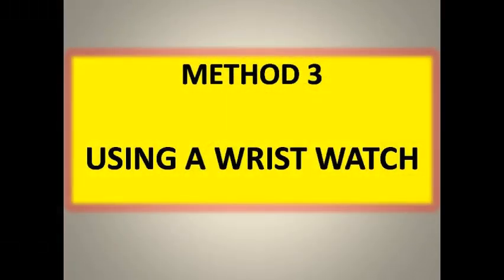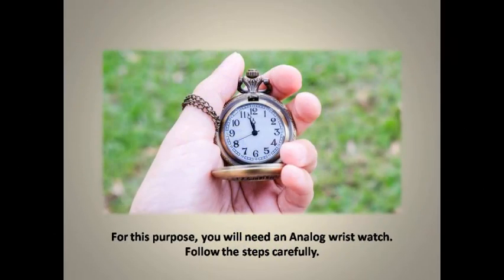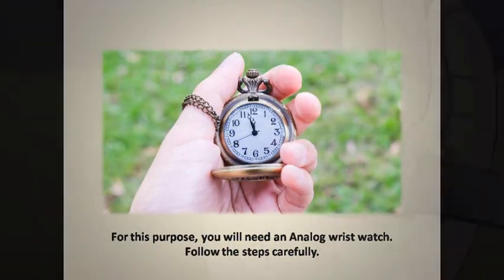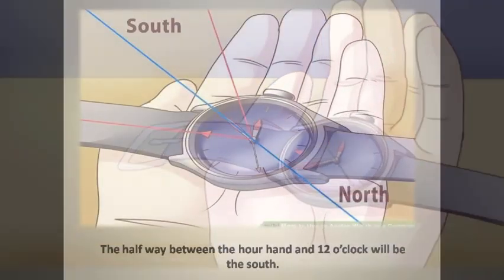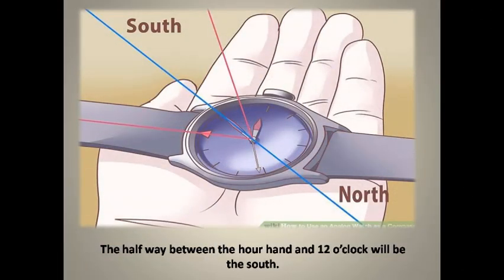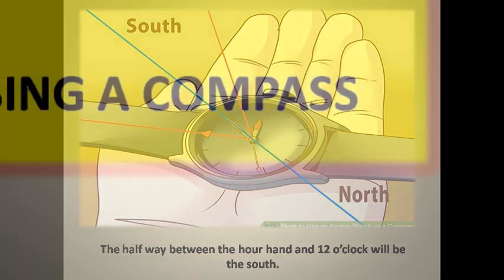The third method is using a wristwatch. For this purpose, you will need an analog wristwatch. Follow these steps carefully: hold the wristwatch in the palm of your hand horizontally, place the hour hand towards the direction of the sun, and the halfway between the hour hand and 12 o'clock will be the south.